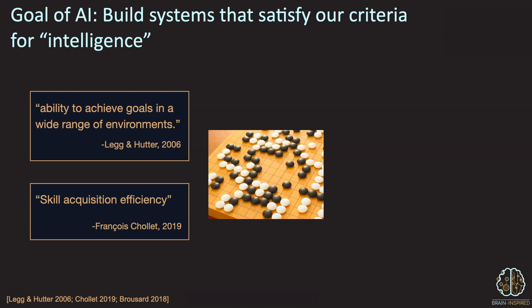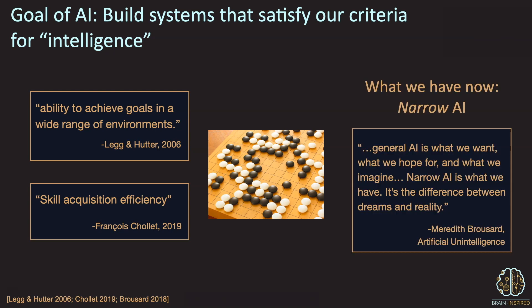So what do we have now? Most of the recent celebrated achievements come from deep learning and deep reinforcement learning. For example, a deep reinforcement learning network that learned to master the game of Go. But if we take these definitions seriously, we wouldn't call that network intelligent. It doesn't achieve goals in a wide range of environments. It achieves one goal in one environment. Nor does it acquire skills efficiently. It's trained on millions of examples. So what we have now, recognized by many people, is narrow AI, systems that can do one or a few things very well.